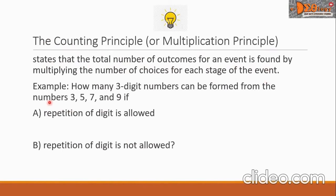Let's have an example. How many three-digit numbers can be formed from the numbers 3, 5, 7, and 9? Letter A: repetition of digits is allowed. Letter B: repetition of digits is not allowed.